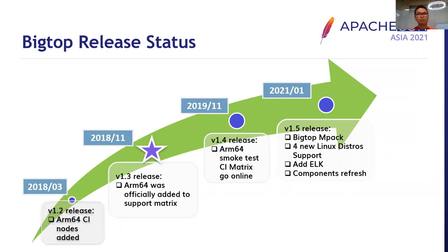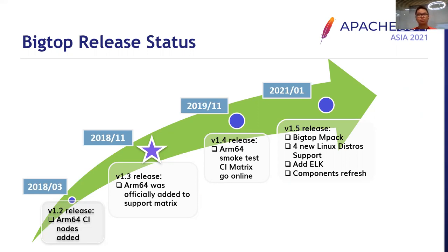Regarding Bigtop's release status, ARM64 support was added since 2018 and ARM was officially added to the Bigtop support matrix with the 1.3 release, making ARM officially a first-class citizen with full ARM support. In this new release, we implemented new features like defining a Bigtop mPack, adding ELK to Bigtop, upgrading core components, and supporting effective use of the Hadoop system on ARM clusters.